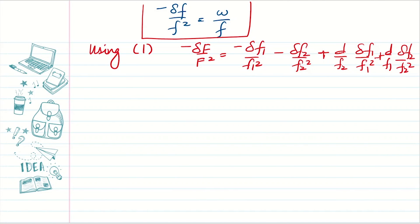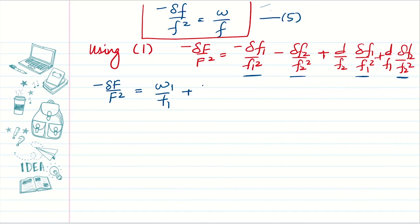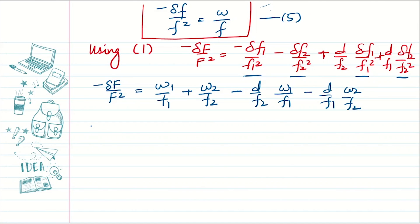So we get the expression δf/f² = ω/f, which we call equation five. Now we substitute equation five into the differentiated mean focal length equation. After replacing all four terms, we get: -δF/F² = -ω1/f1 - ω2/f2 + d·ω1/f1·(1/f2) - d·ω2/f2·(1/f1), combining into: -δF/F² = -ω1/f1 - ω2/f2 + (d/f1f2)(ω1 + ω2).